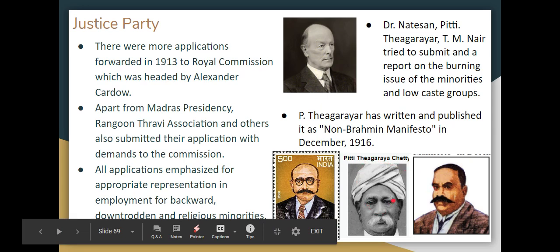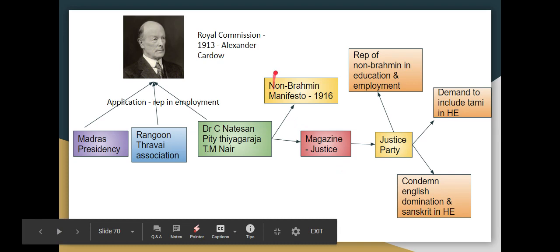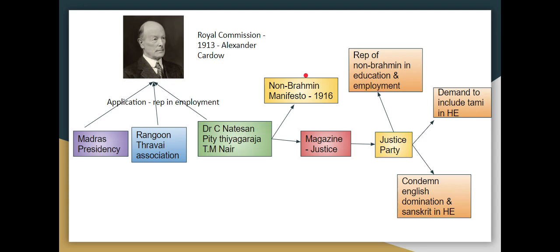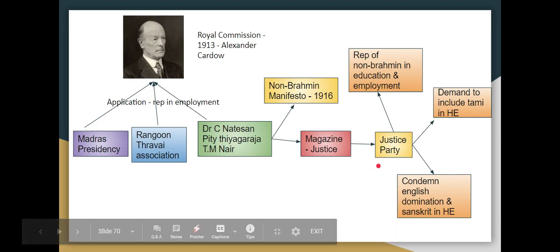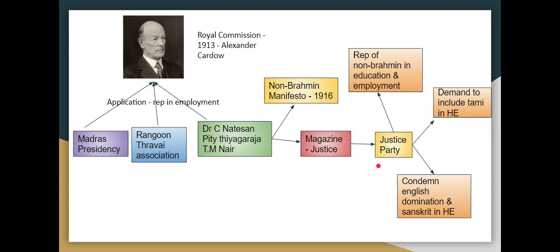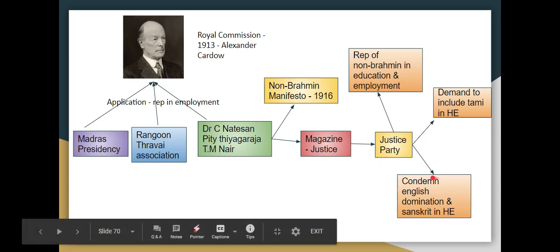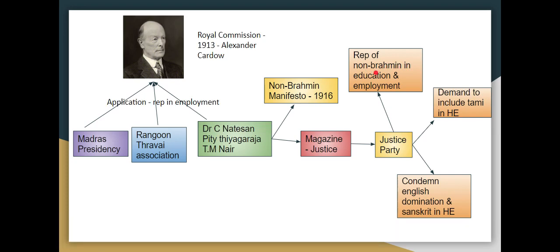A Non-Brahman Manifesto was published in December 1916. That federation also published a magazine called Justice, which expressed their ideals and thoughts. Later, this organization formed the Justice Party.